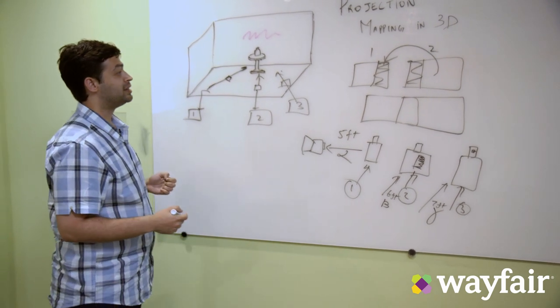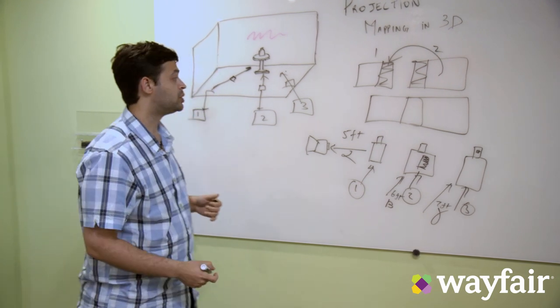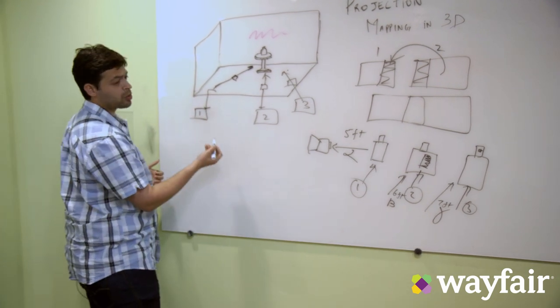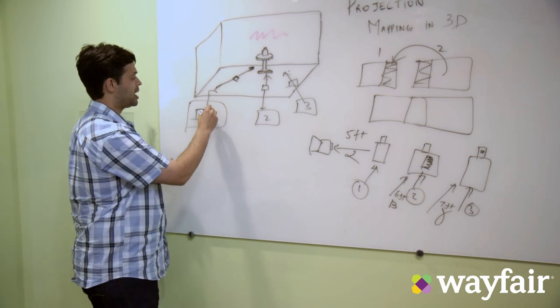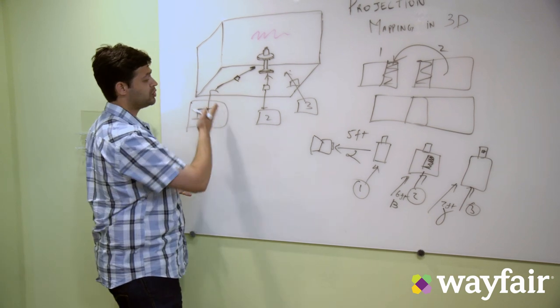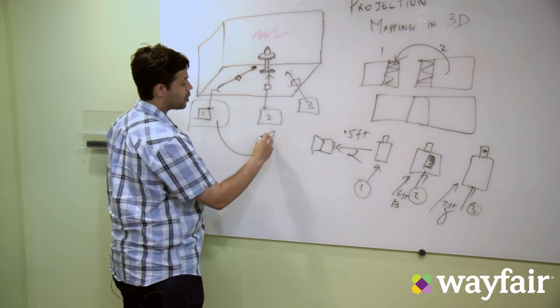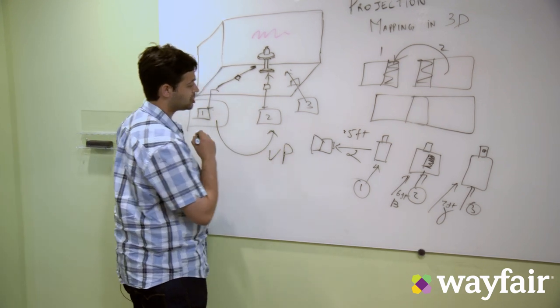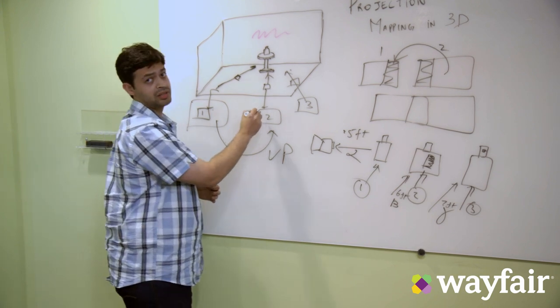That's where projection mapping comes into place. What we do is we would probably just take a shot 1, and if you have a depth sensor then that's better. That could give you the distance that we need.